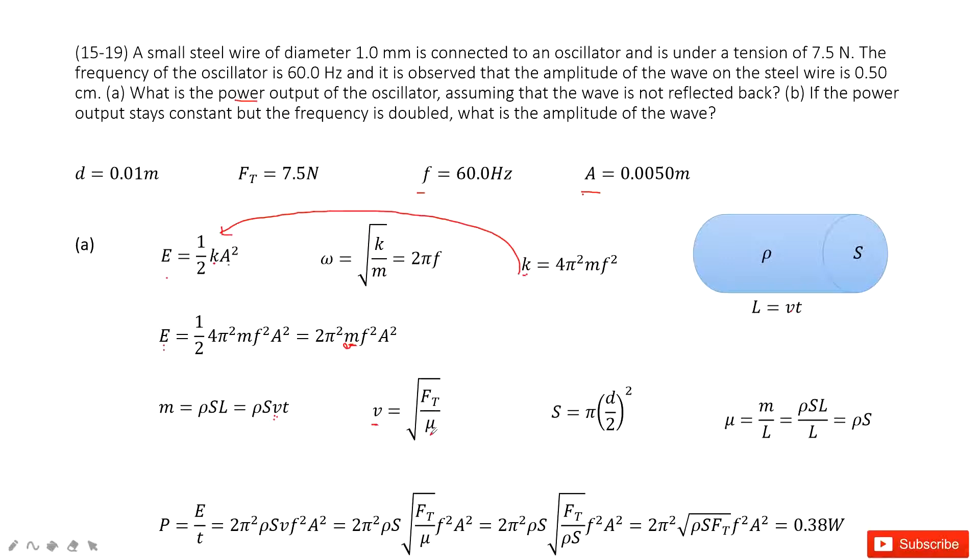μ is called linear density for this cable. So mass divided by L. So use ρS divided by L, we get ρS.